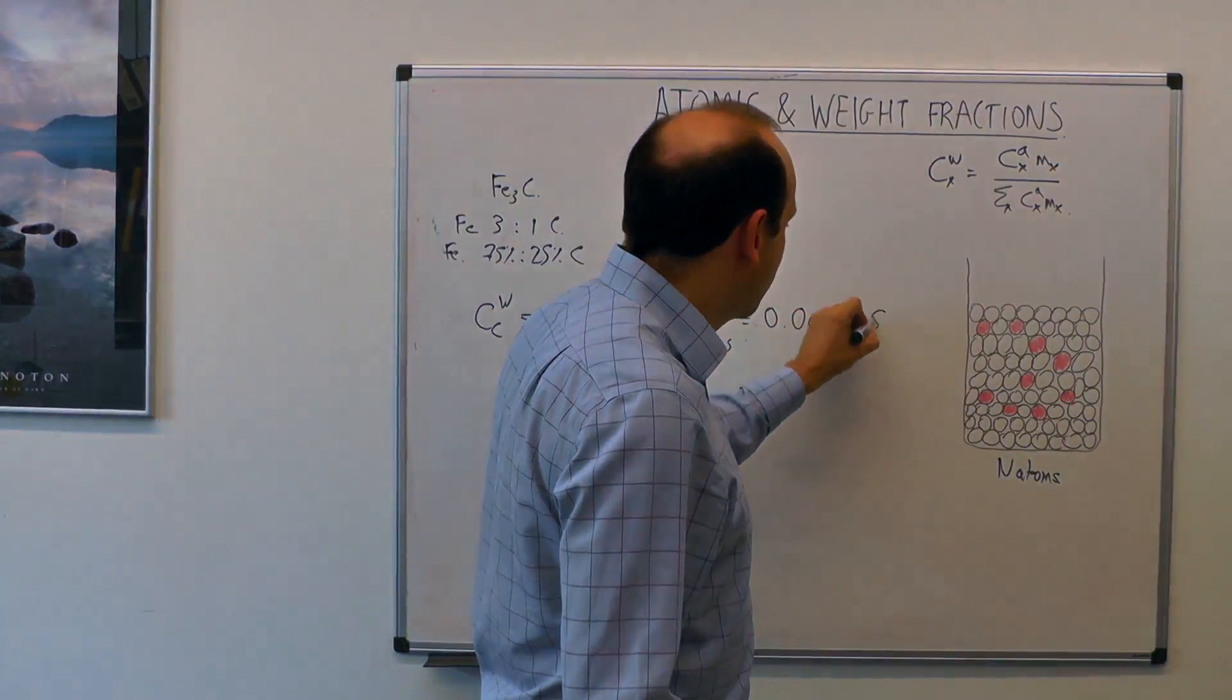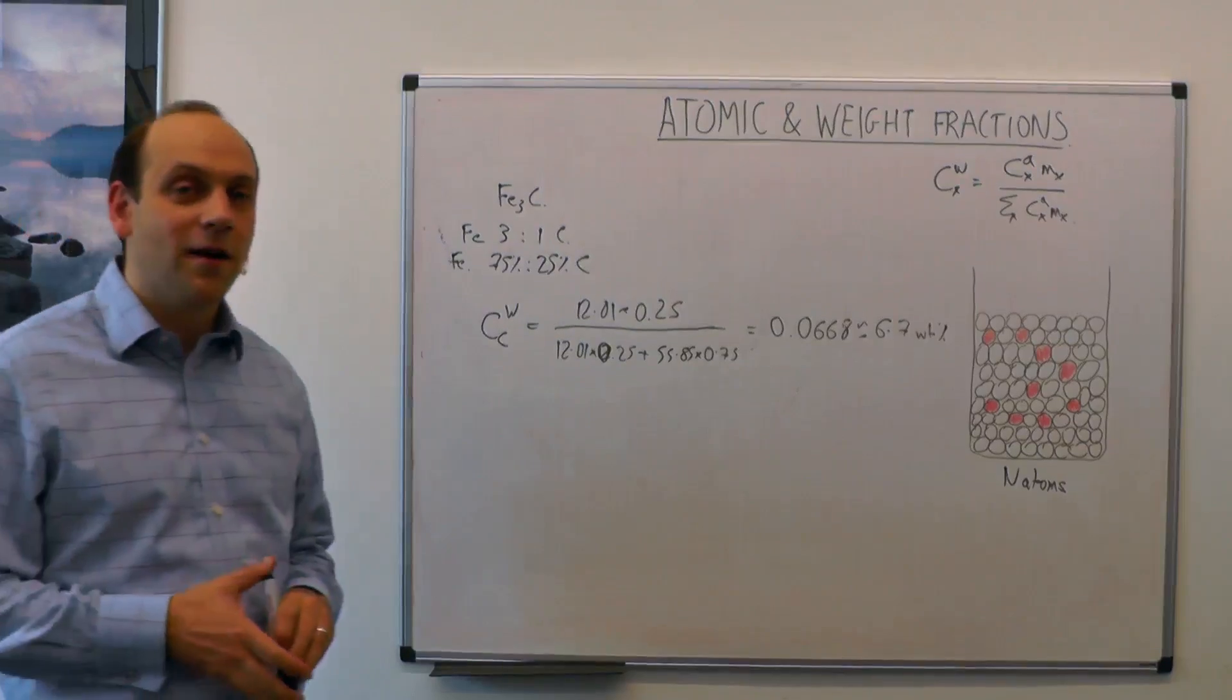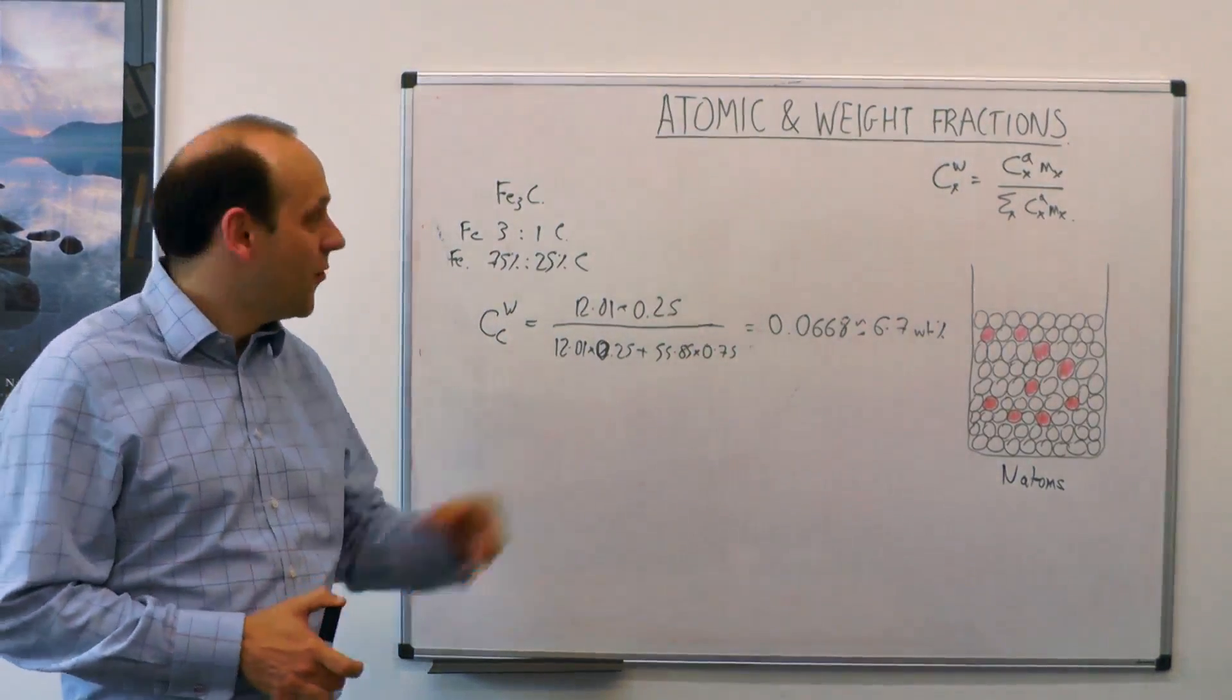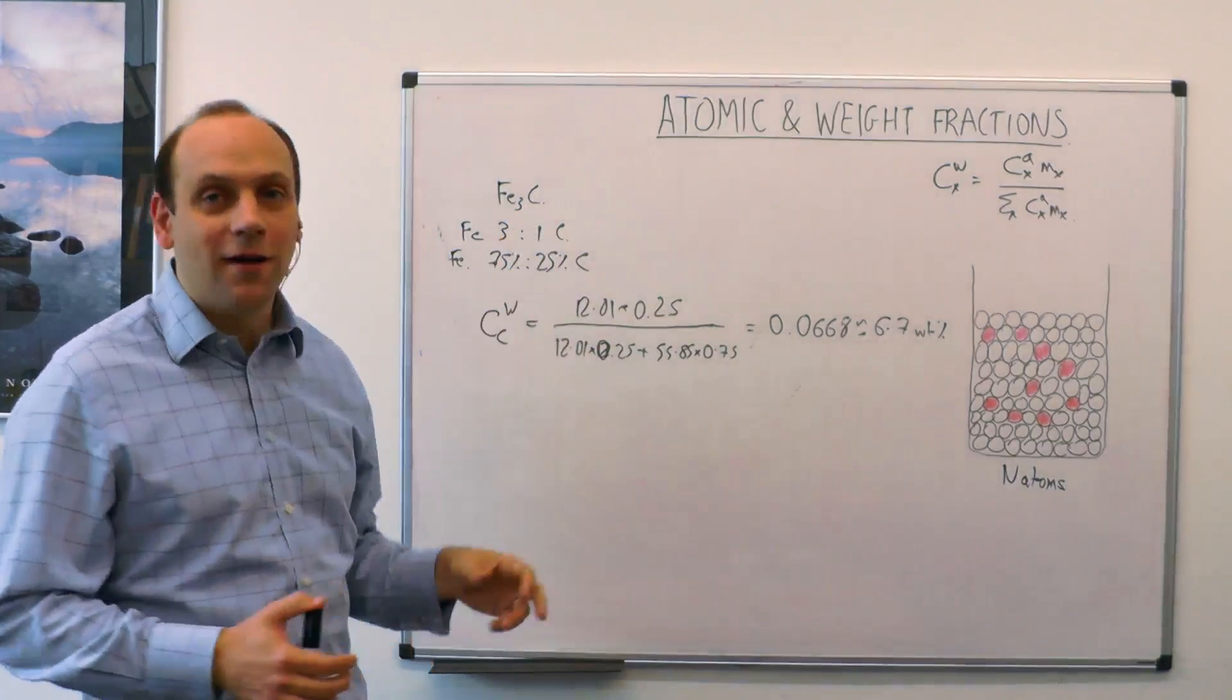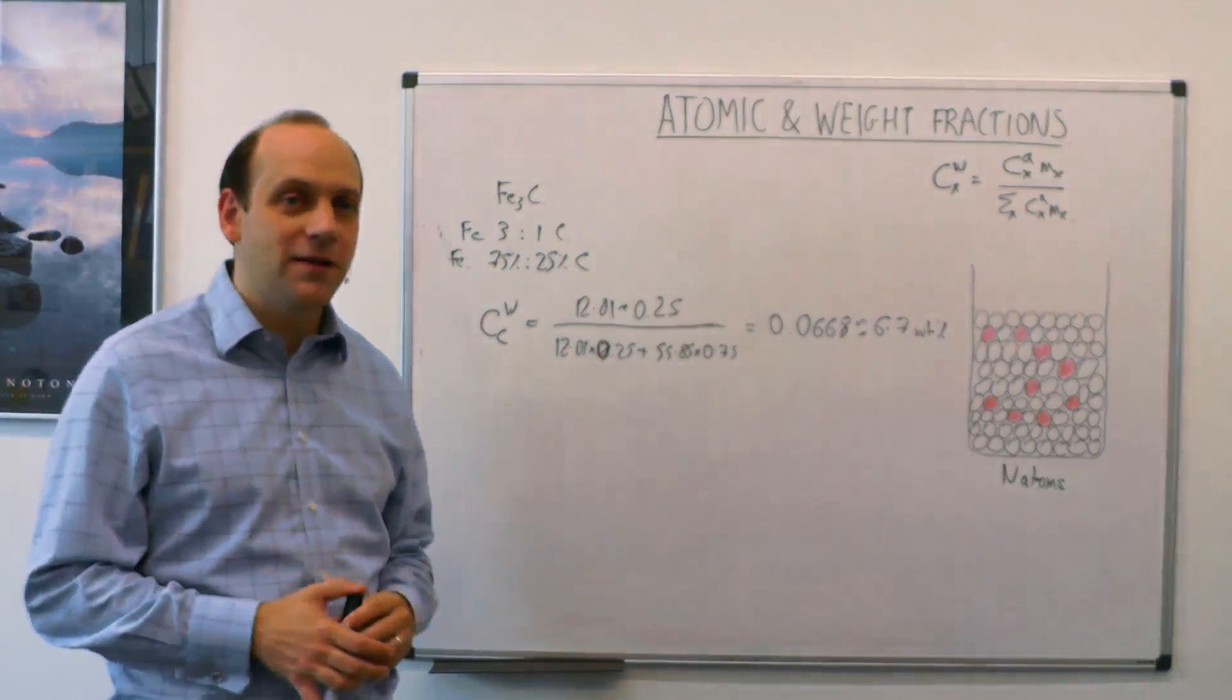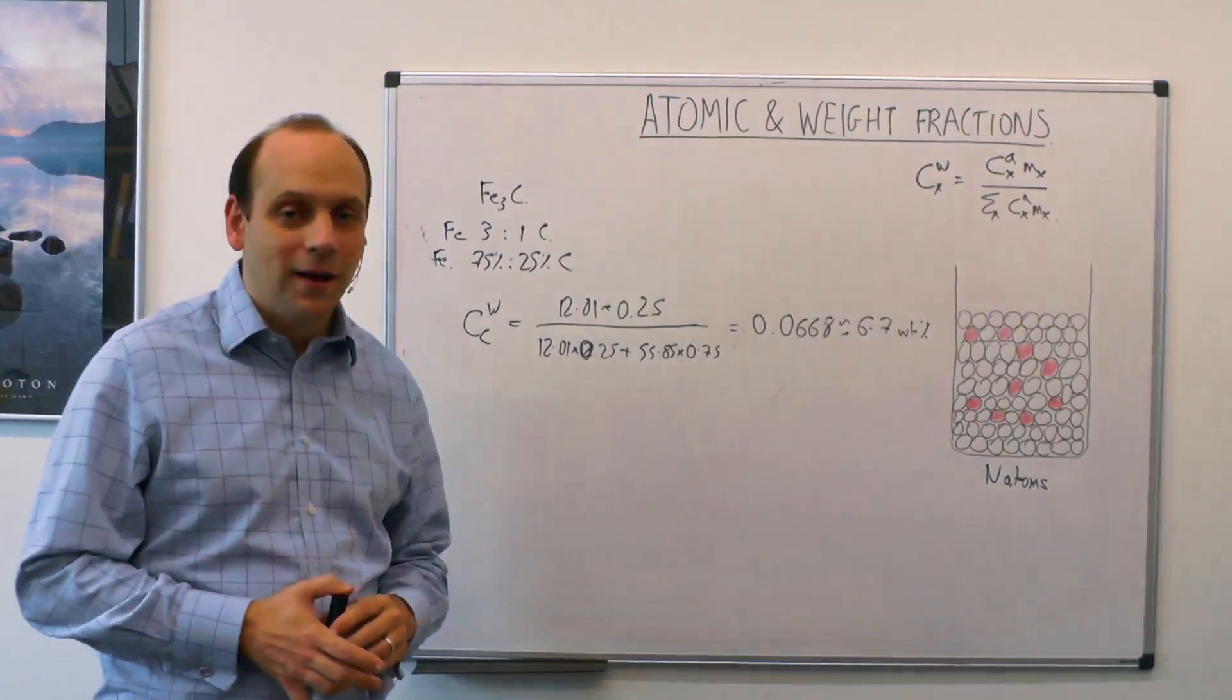which is about 6.7 weight percent. If you look at where Fe3C appears on a phase diagram where the composition is plotted in weight percent, then Fe3C will appear at 6.7 weight percent carbon rather than the 25 it would be in atomic percent. Because carbon is so much lighter, Fe3C appears at a much lower weight percentage of carbon. For some of these light elements in phase diagrams, it looks like there's very little solubility, but it might be higher.